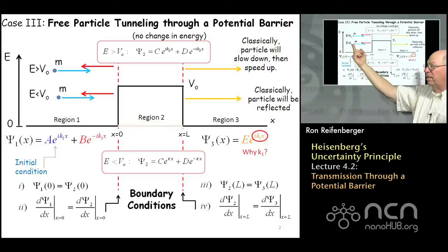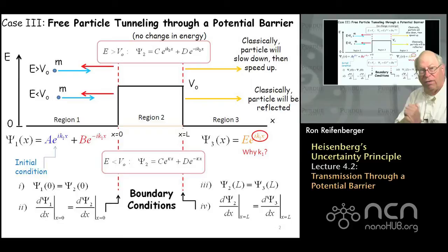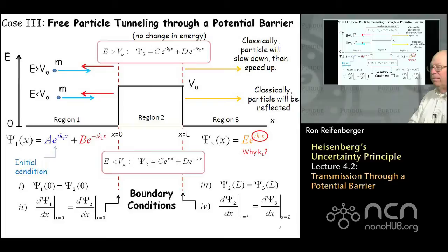Classically you would expect all particles with energy E less than V0 would be reflected from the barrier — anything that comes in would be reflected back. And that's certainly the case if the width of the barrier L is very large, as we showed in the previous lecture. But what we're going to show, surprisingly, is that if this barrier has a finite width, there is in fact a probability that the particles will tunnel through it.